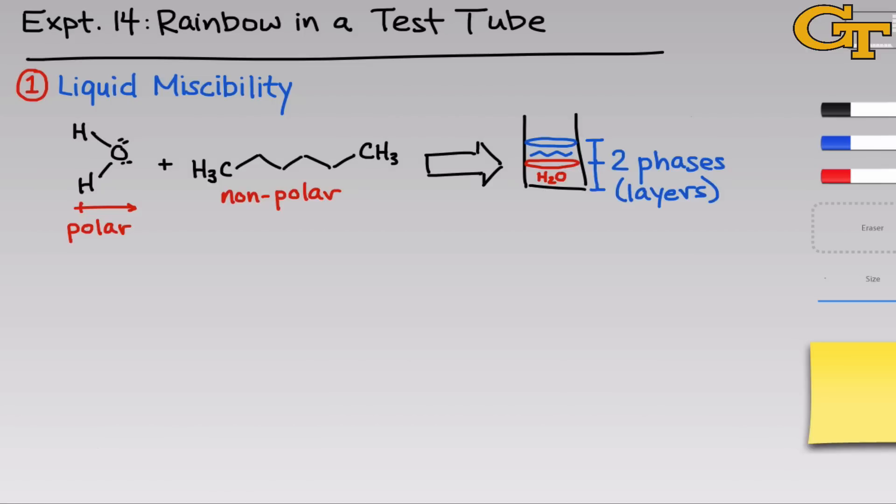The mixture separates spontaneously into two layers. Even if we mix the components very well initially, they'll spontaneously separate. Because the two liquids don't mix up to form a single homogeneous solution, they're called immiscible — unable to mix with one another.